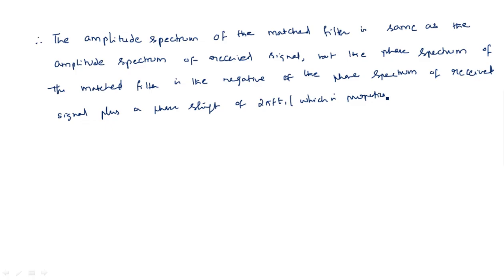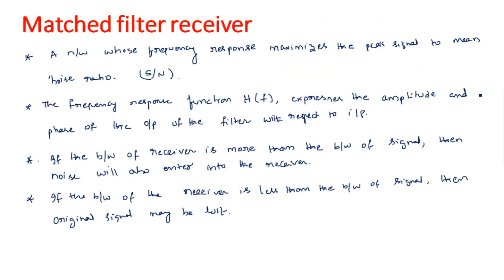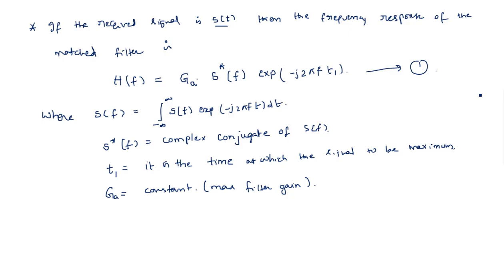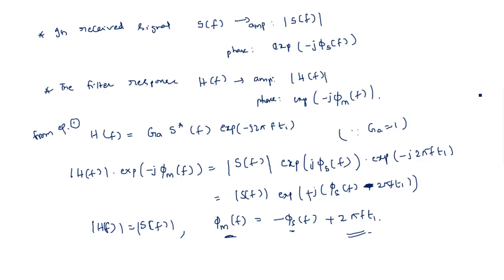So the matched filter receiver is a network whose frequency response maximizes the peak signal to mean noise ratio. We choose the receiver bandwidth as a compromise between wide and narrow. The matched filter frequency response is H(f) = GA · S*(f) · e^(−j2πfT1), comparing the amplitude and phase with the received signal frequency response.